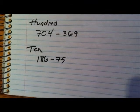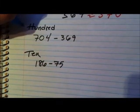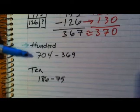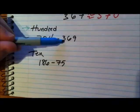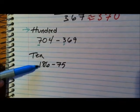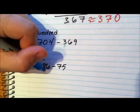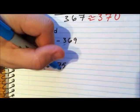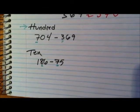So here's your exit task. You are to round or estimate the difference of 704 and 367 to the nearest 100. I'd also like you to estimate the difference of 186 and 75, but only to the nearest 10. Remember, you can rewatch this video as many times as you like.